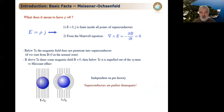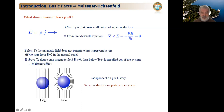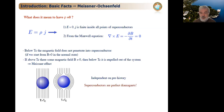Let me briefly remind you of the key properties of superconductors. The first is the Meissner-Ochsenfeld effect: if a material is in its normal state above the critical temperature, the magnetic field penetrates perfectly. Upon cooling below the critical temperature, the magnetic field is expelled from the superconductor because currents generated on the surface create a magnetic field that compensates the internal field, making the net magnetic field zero. Superconductors are therefore perfect diamagnets.